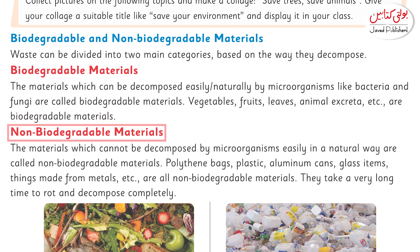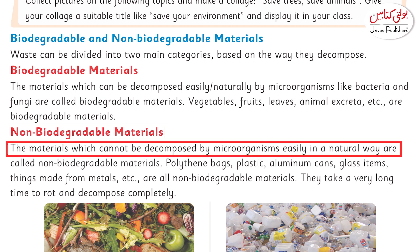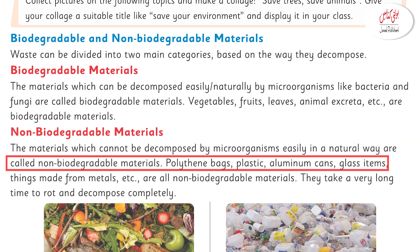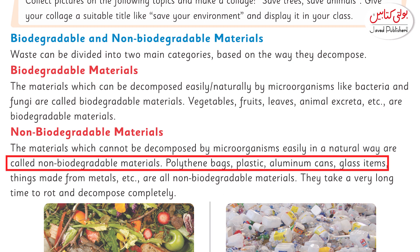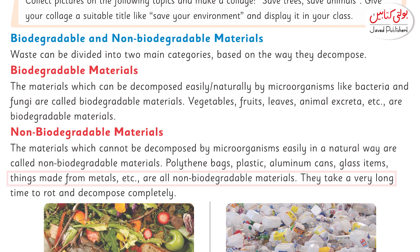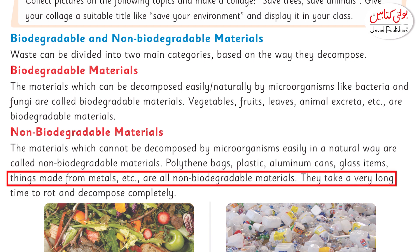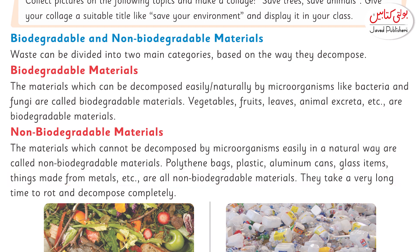We will have to use biodegradable materials more and reduce non-biodegradable ones. The materials which cannot be decomposed by microorganisms easily in a natural way are called non-biodegradable materials, like polythene bags, plastic, aluminum cans, glass items, and things made from metals.